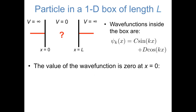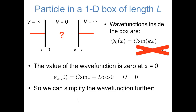Let's first look at the requirement that the wave function has to be equal to zero at x equals zero, the left side of the box. If we plug x equals zero into the wave function, we find that the wave function at x equals zero equals c sine zero plus d cosine zero. Sine of zero equals zero and cosine of zero equals one, which means that this expression is equal to d, and as we know from the boundary condition, also has to be equal to zero. So we find that the constant d has to be equal to zero, which simplifies our wave function a lot. It means the cosine term goes away completely, and the wave function has to be equal to a constant c times the sine of kx.